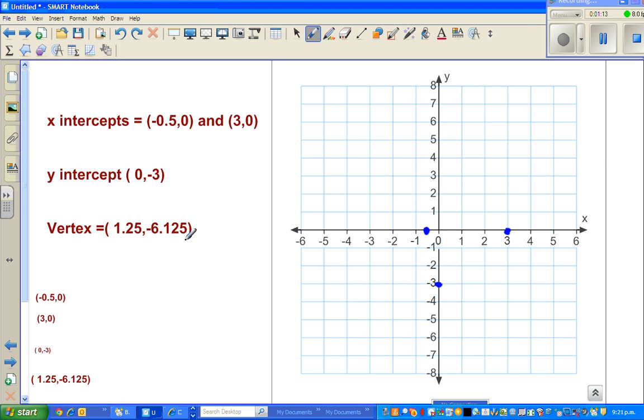And the vertex is 1.25. So this is 1, this is 2, so 1.25 comes here. This is 6, and 6.125 is almost 6, so I'll plot this. It's not exactly difficult to plot, but you are only sketching the graph. So these are the main points.